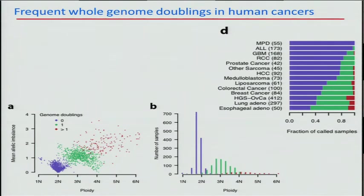Taking a large set of 3,000 copy profiles analyzed with this method, we characterized how common genome doublings are across human cancer. It varies across different cancers — for example, about 60 percent of TCGA ovarian cancer samples went through at least one genome doubling event during their evolution, whereas ALL and MPD don't usually have genome doublings, and GBM samples from TCGA had about 20 percent that did genome double.